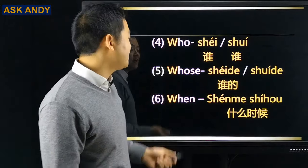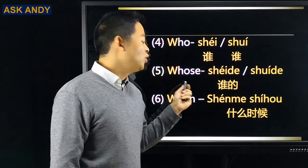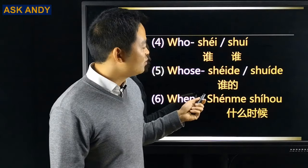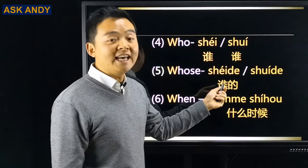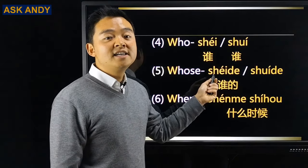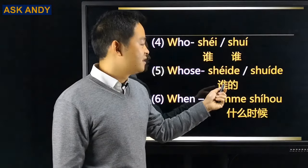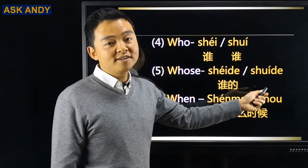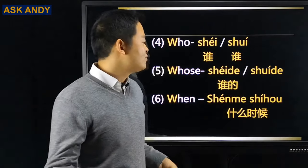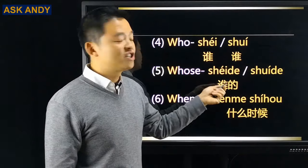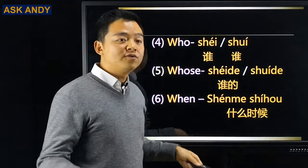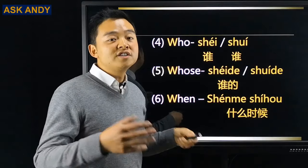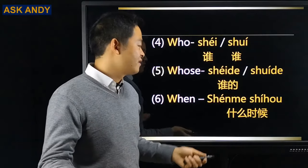Number five: whose. That would be 谁的 (shéide) or 谁的 (shuíde). I recommend 谁的 (shéide), but for listening, you need to understand both versions.